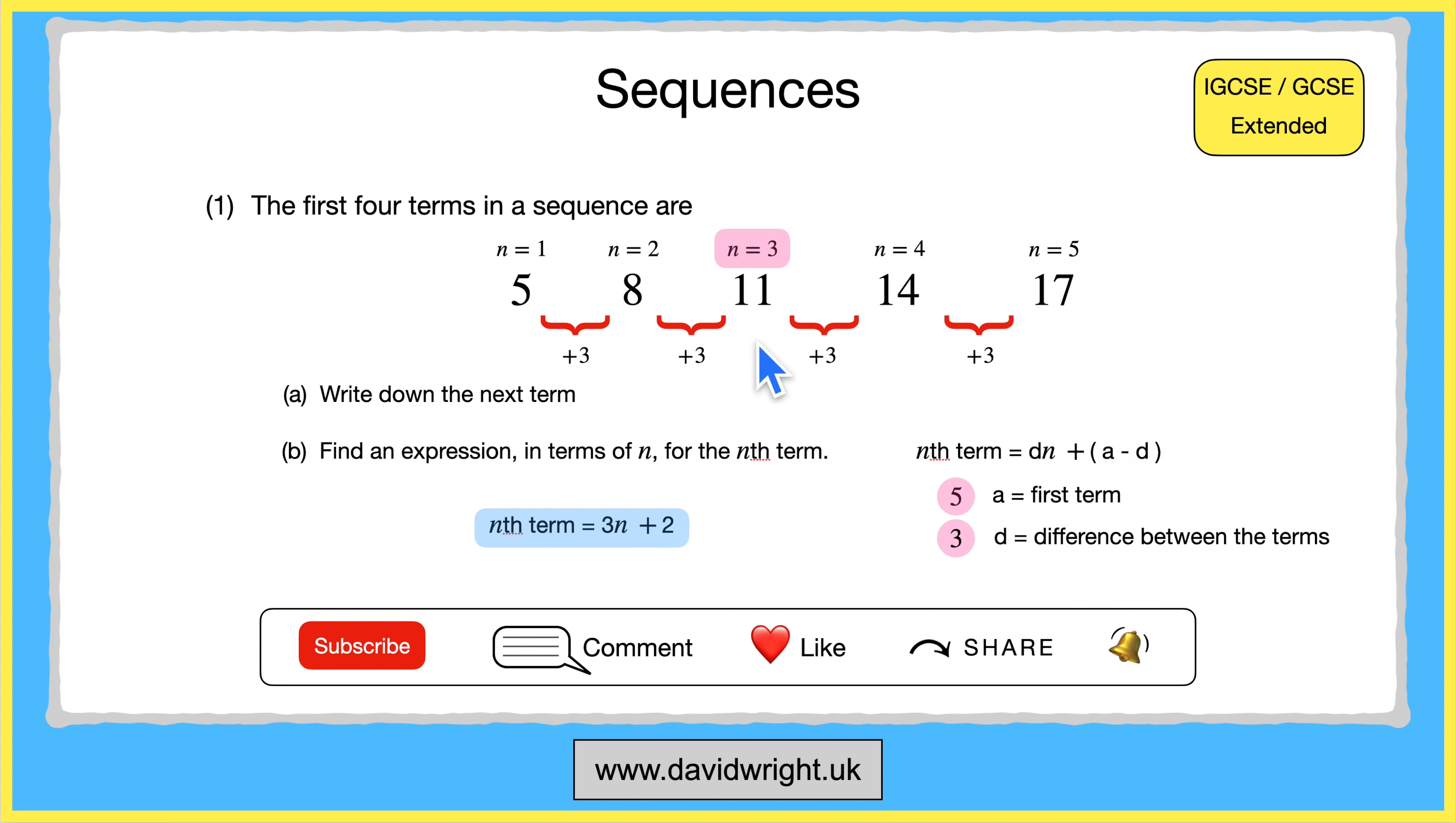So when n equals 3 our expression tells us that the sequence number is 3 times 3 plus 2 which is 11. So it looks correct.